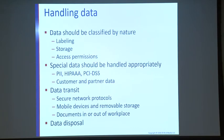Data in transit — anything going across an unsecured network, whether wireless, Cat5 cable, the internet, or coming out of your phone — needs to be encrypted. If it's data that you care about, data that's sensitive, it should be encrypted going across the wire.